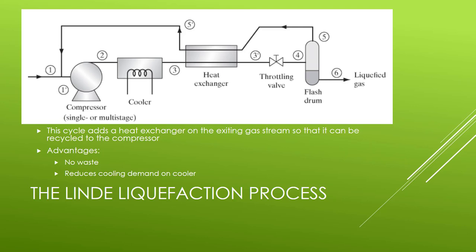we're going to use a heat exchanger that's going to be used to complete the cooling of the material coming from the cooler into the throttling valve. And by doing that, it's also going to take advantage of some of that excess energy we've added to our gas before it goes back into the compressor. So the advantage of this is that there's no waste and we have reduced cooling demand on our cooler.